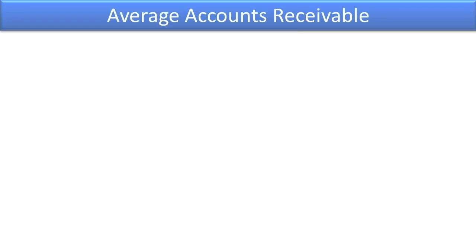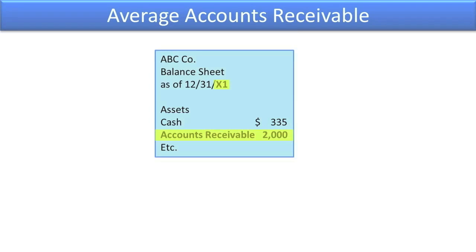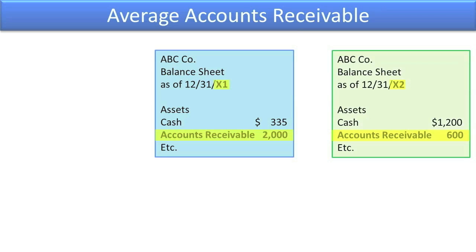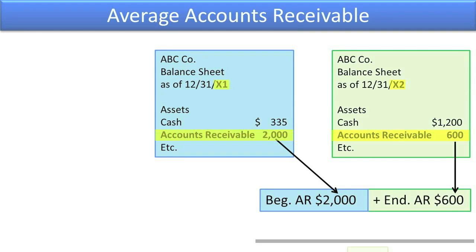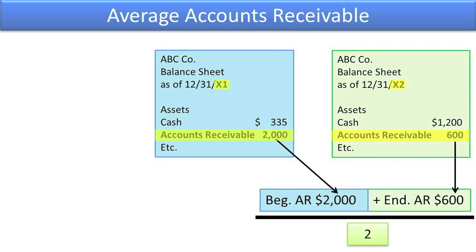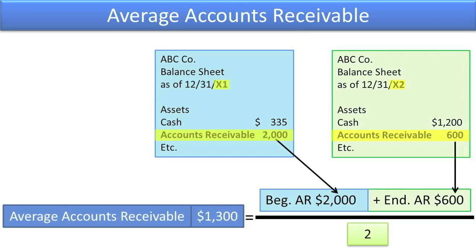Average accounts receivable represents the average of the beginning accounts receivable and the ending accounts receivable. It is computed by adding beginning accounts receivable to ending accounts receivable and dividing the sum by 2 to arrive at the average for the period. The average is used to eliminate some of the fluctuation in the account from the beginning of the period to the end of the period.